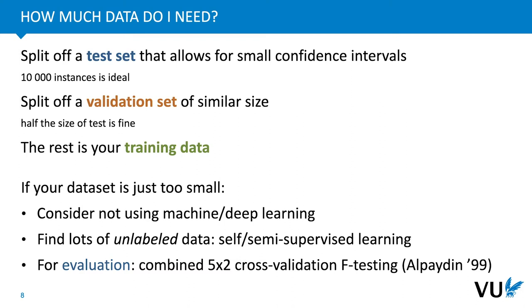If you don't have alternative approaches, one way to go is to collect a lot of unlabeled data. Often the problem is that labeled data is very expensive, but unlabeled data is easy to get. In that case, we can train in a self-supervised or semi-supervised setting — training an unsupervised model first on the unlabeled data, then refining it using the limited labeled data we have. If you're evaluating on a small test set, techniques like 5x2 cross-validation and F-testing can give a little more confidence, but ultimately you simply need a lot of test data to be confident about which model to prefer.